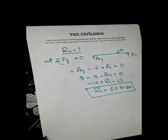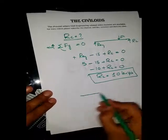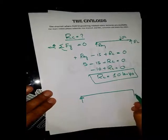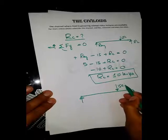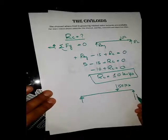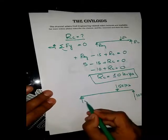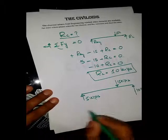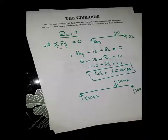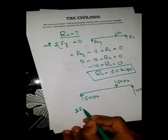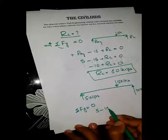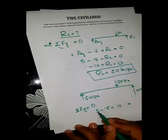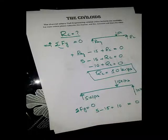We have now solved the beam for all unknowns. The reaction at A (RaY) is 5 kips and the reaction at C (Rc) is 10 kips. To verify, we check ΣFy=0: 5 − 15 + 10 = 0. The equation is satisfied, confirming we have determined the reactions correctly.